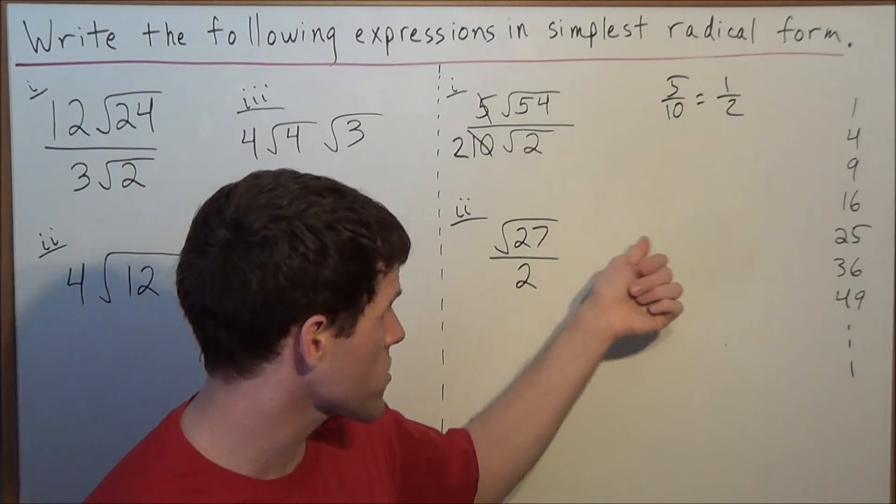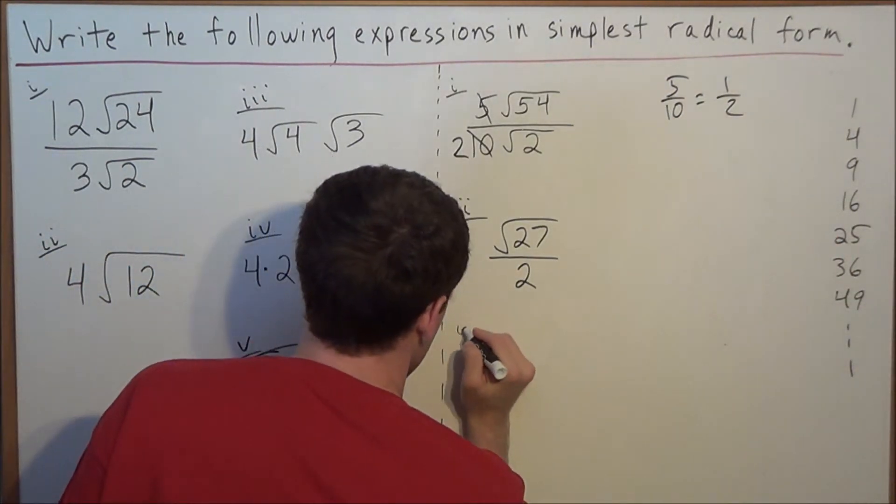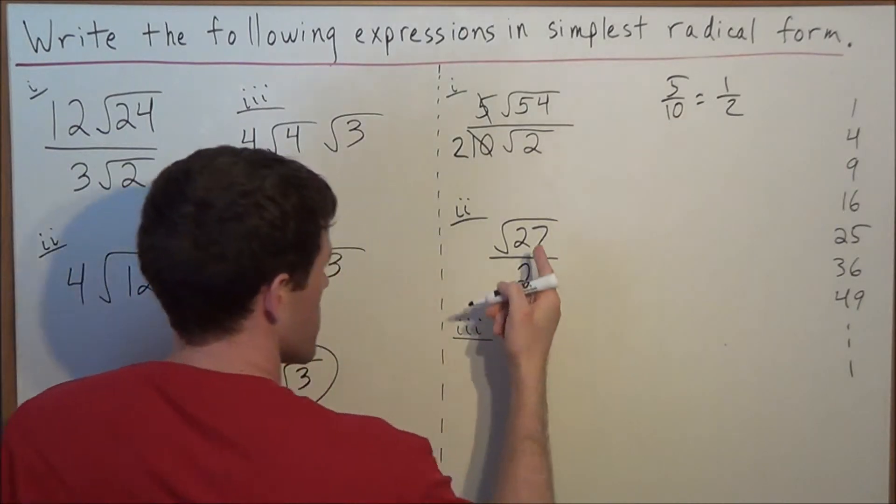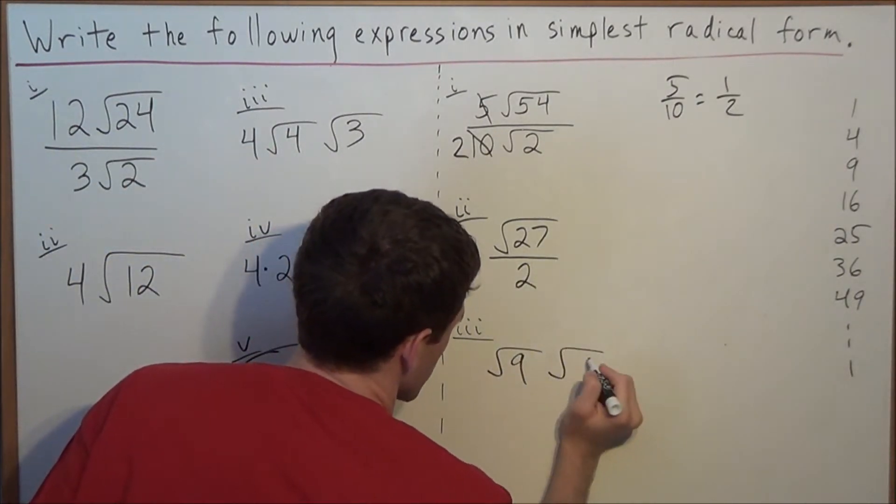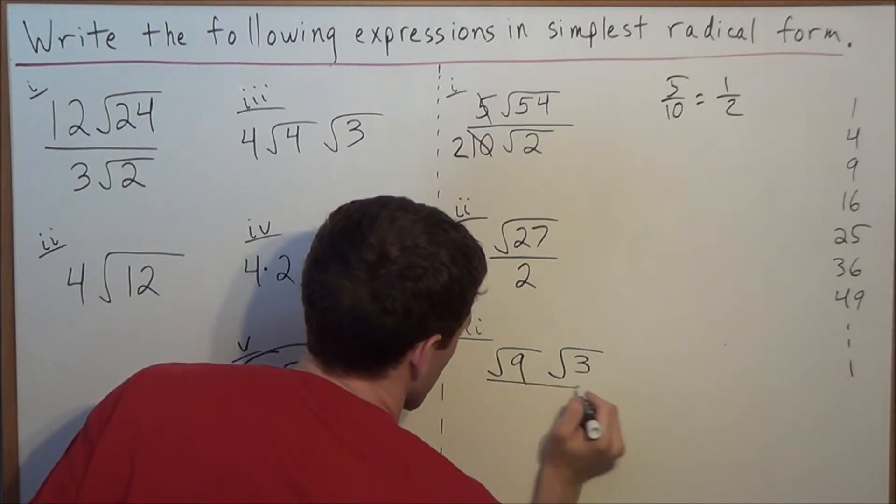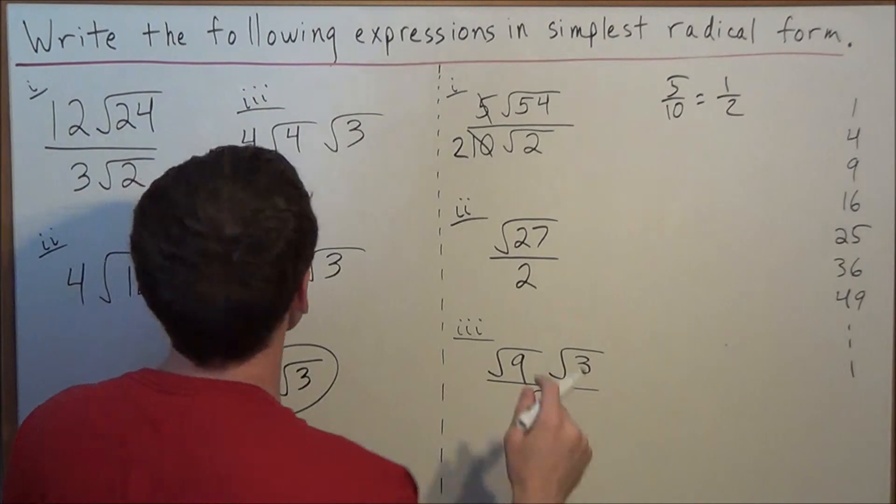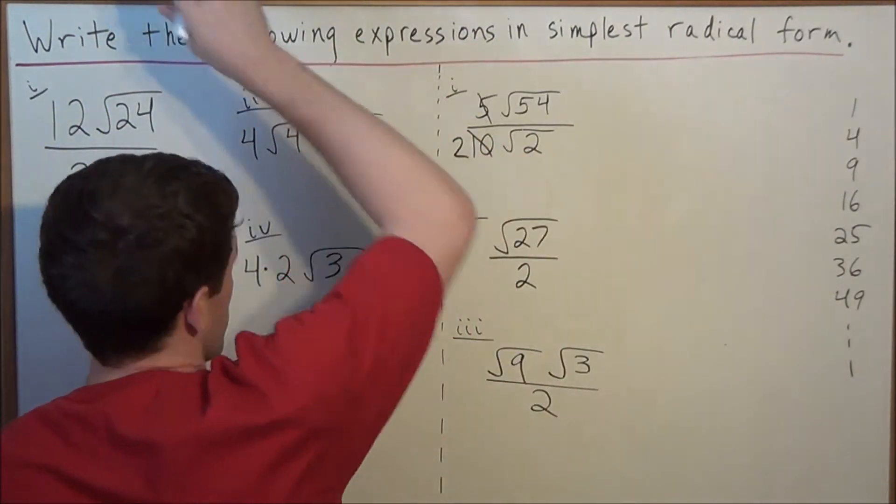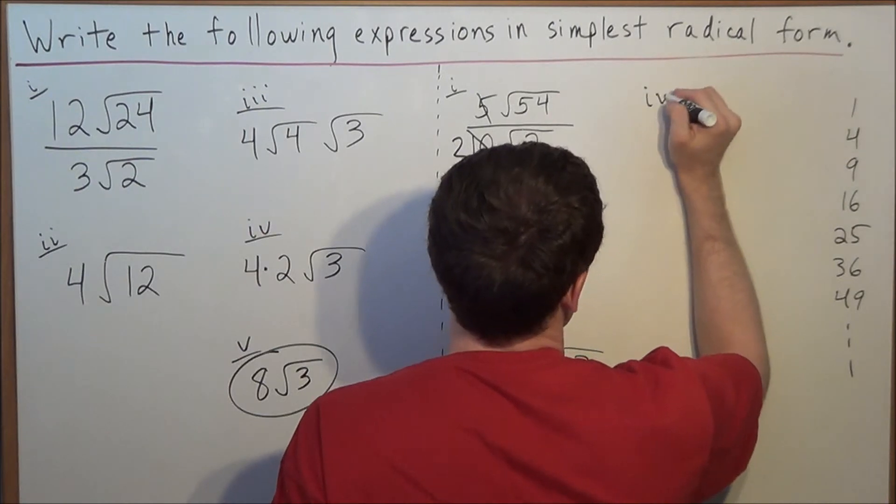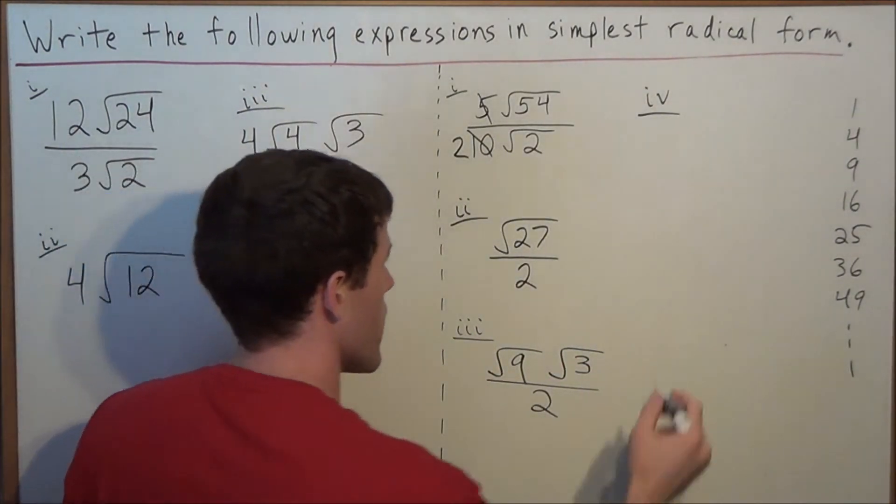And the largest perfect square factor of 27 is going to be 9. So we write for our next line, instead of 27, we could call it radical 9 times radical 3, and we still have to put all of this over 2. So now, as we move towards the next part of this problem, all we need to think about is what is the square root of 9? The square root of 9 equals 3.